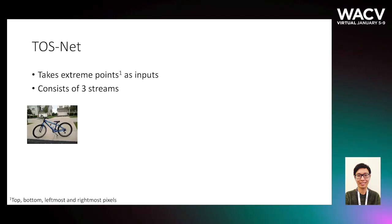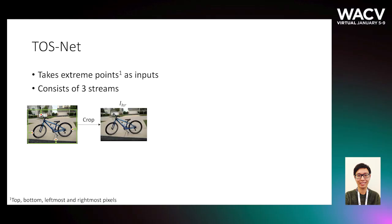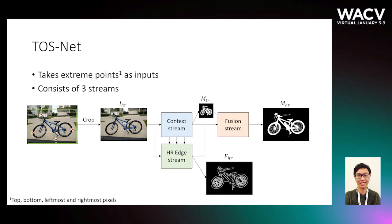Secondly, we propose a simple baseline known as TOSnet. Following previous work, our TOSnet takes extreme points — the top-most, right-most, bottom, and left-most pixels — as input. We then compute the bounding box enclosing the object and expand it to include some context, followed by a cropping operation. Overall, our TOSnet consists of three streams: a context stream, a high-resolution edge stream, and a fusion stream.